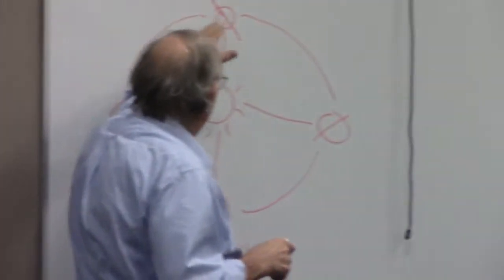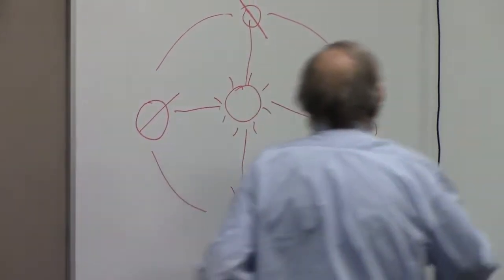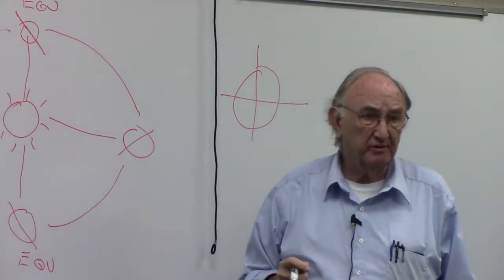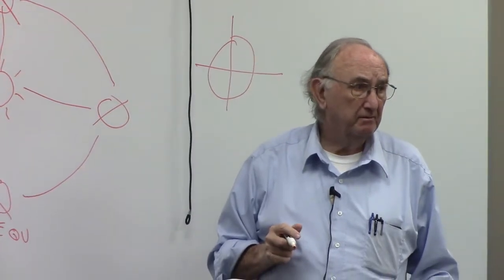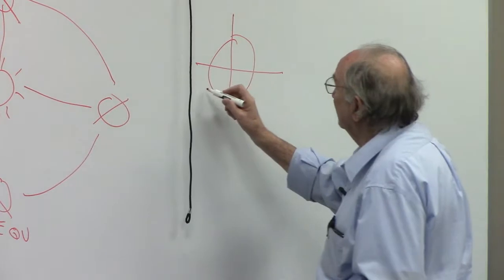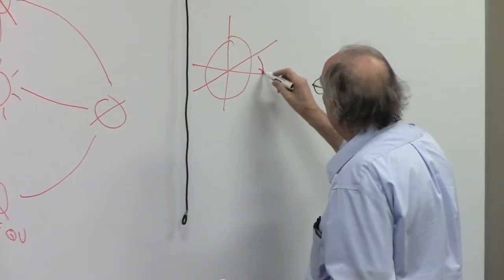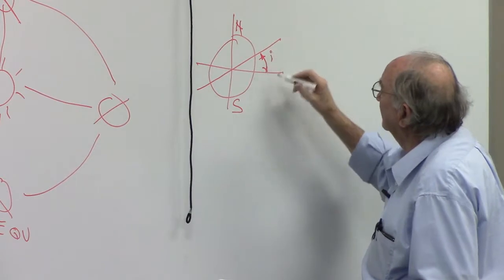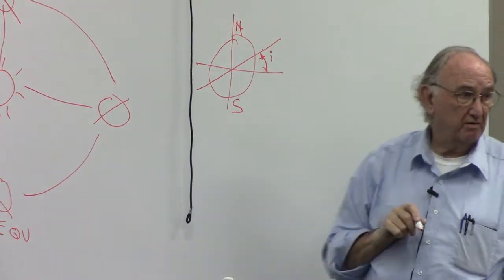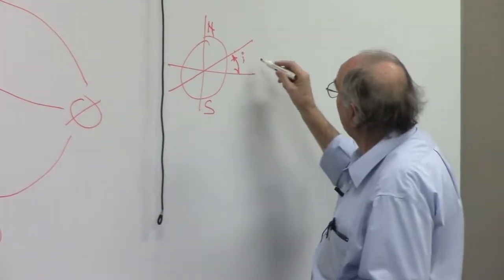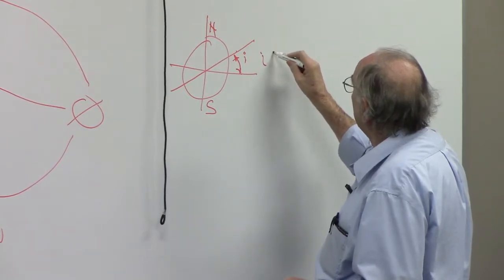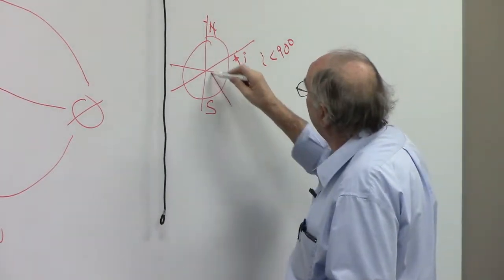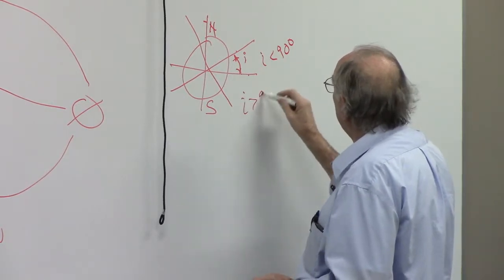The question now is why does that orbit change? The inclination of an orbit is this angle right here. Here's the equator, here's the north pole, and here's the south pole. The inclination of the orbit is the angle between the equator and the plane of the orbit. You can have a plane of the orbit here, so I is less than 90 degrees. But you can also have something here where I is greater than 90 degrees.